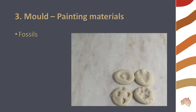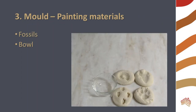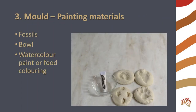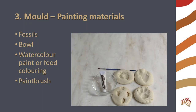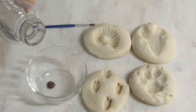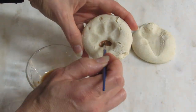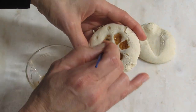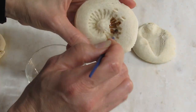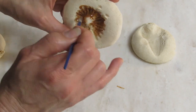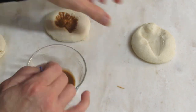You will need the fossils, a small bowl, watercolor paint or food coloring, a paintbrush, and some water. Mix a little bit of paint with a small amount of water and use this to paint your fossils. I'm not particularly neat, but you can make this as realistic as you want to.